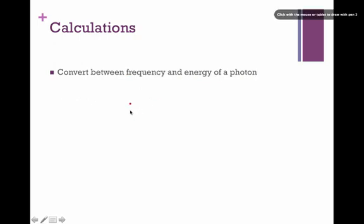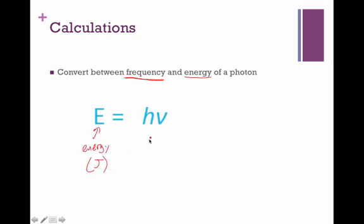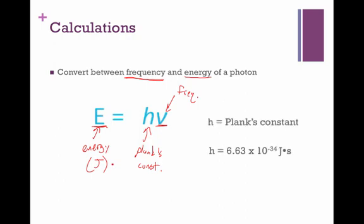Our second calculation then has us converting between frequency and energy. Each photon of light, or each beam of light, has a certain quantity of energy associated with it, and that's going to be very important in this chapter. And that equation looks like this. E is our energy, and that's going to be in the unit of joules. H is something known as Planck's constant, and that's a number we're going to be given in a minute. And then nu is our frequency again. So just like before, if you know the quantity of energy, or you know the frequency, that allows you to calculate the other one, as long as you have the value for Planck's constant. And the number we'll be using for this number is 6.63 times 10 to the negative 34th joule seconds. We can talk a little bit more about what this number means and where it comes from when we get to class.